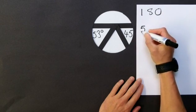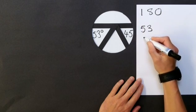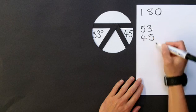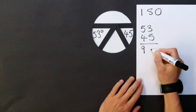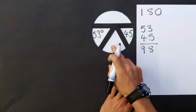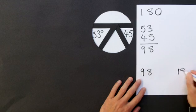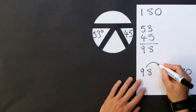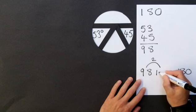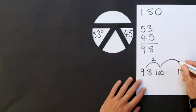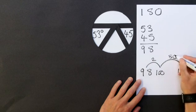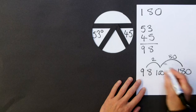We already have 53 and the 45, which gives us a total of 98. Now, I need a total of 180. So, I'm going to use the counting on method. I'm going to jump 2 to 100 and then jump another 80 to get me to 180.